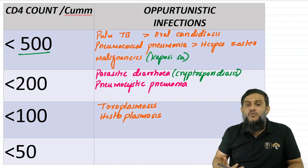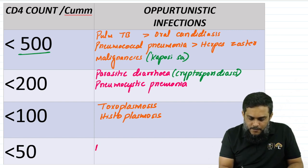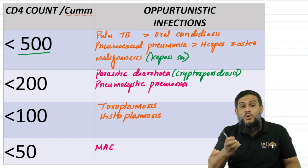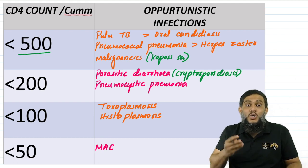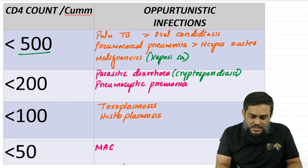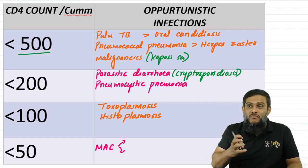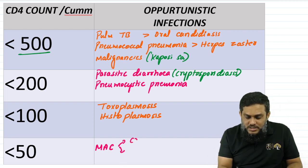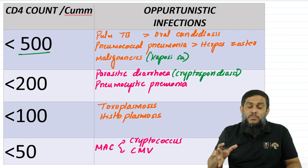If CD4 count falls below 50, the very important clinical manifestation is MAC — mycobacterium avium and mycobacterium intracellulare complex — two atypical mycobacteria, also called non-tuberculous mycobacteria. Along with MAC, remember two more C's: one fungus — cryptococcus — and one virus — cytomegalovirus.